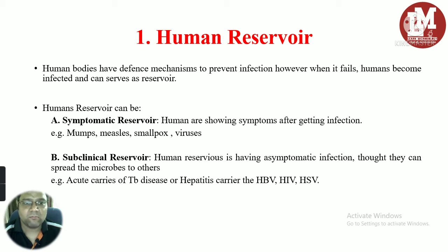Humans showing symptoms of disease after getting infected are considered symptomatic reservoirs. In cases of diseases like mumps, measles, and smallpox, humans can behave like a symptomatic reservoir. The second type is subclinical reservoirs — humans remain asymptomatic, meaning they remain infected with the microorganism but do not show any symptoms, although they can still spread the microorganisms to others. This can happen in cases of the acute phase of tuberculosis.